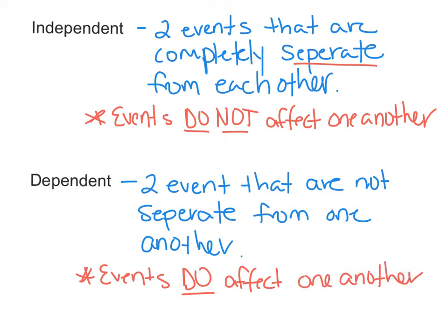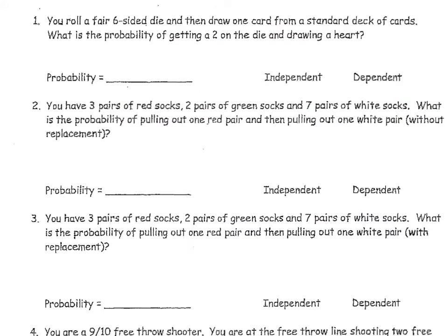Let's take a look at some events and determine whether they are independent or dependent and calculate the probabilities. The first one: you roll a fair six-sided die and then draw one card from a standard deck of cards. What is the probability of getting a two on the die and drawing a heart? What I roll on the die is not in any way going to affect what I draw out of the deck of cards — they're completely separate events, so these are called independent events.